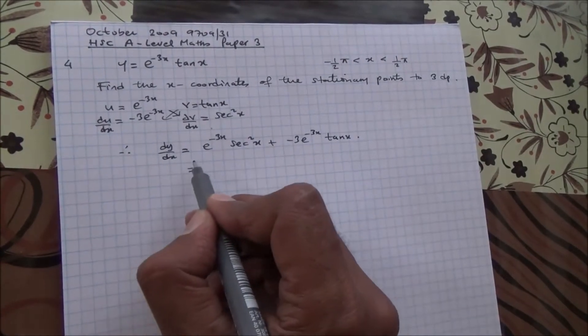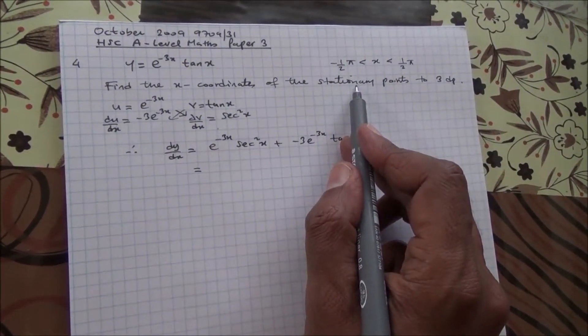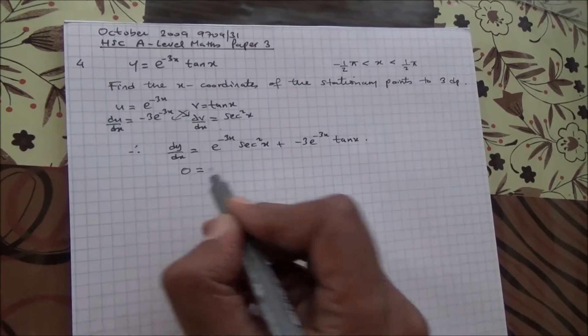Now, at stationary points, what happens? dv by dx is equal to zero. Therefore, we can equate this to zero.